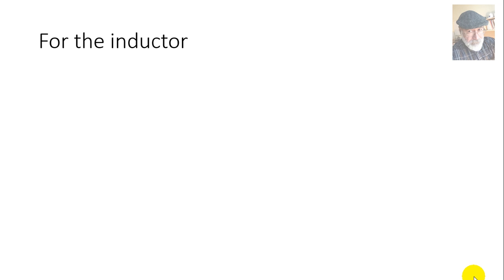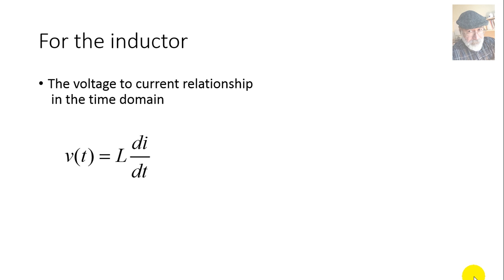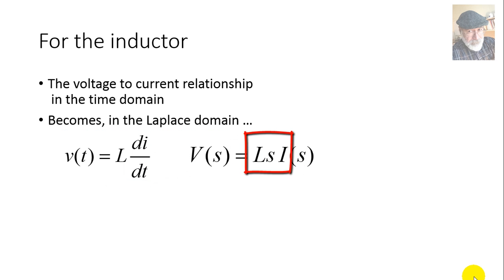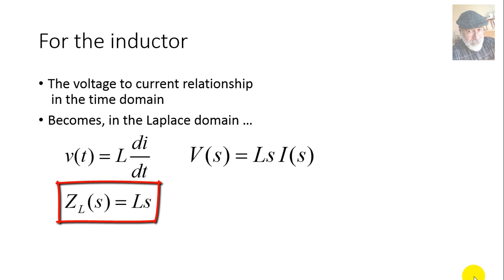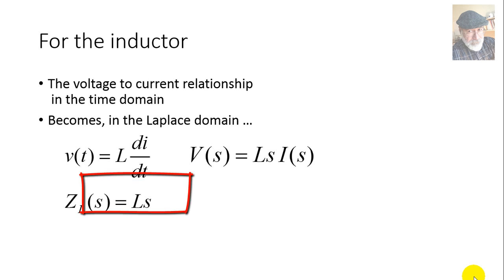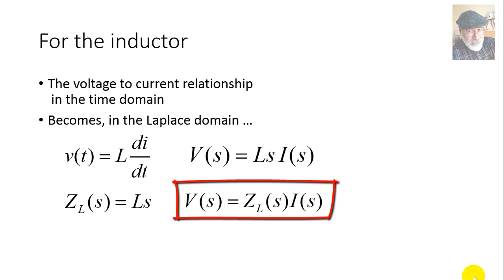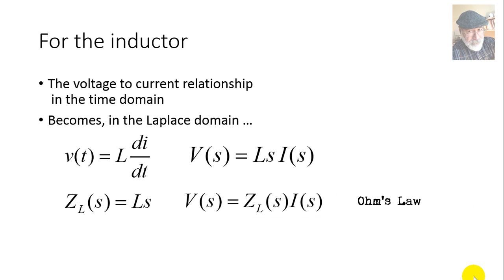Let's apply what we've learned to the inductor. The voltage in the inductor is V_L = L·di/dt. If we apply the Laplace transform, di/dt becomes s·I(s), so V_L = L·s·I. If we define Ls as the impedance of the inductor in the Laplace domain — Z_L = Ls — then we can rewrite this expression as V = Z·I: Ohm's law all over again.